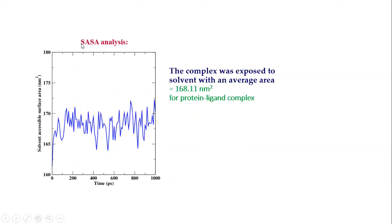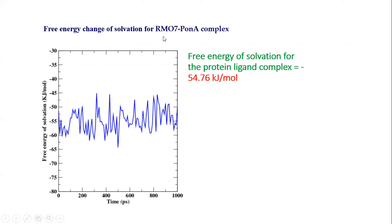The solvent accessible surface area (SASA) was calculated because of the solvation of the ligand and protein during the molecular dynamics simulation study. A large number of molecules are submerged within the solvent. The SASA is 160.11 nm², meaning the protein-ligand complex was immersed within the solvent. This is the free energy of solvation calculation for the complex of Withanolide A and PonA1 protein.